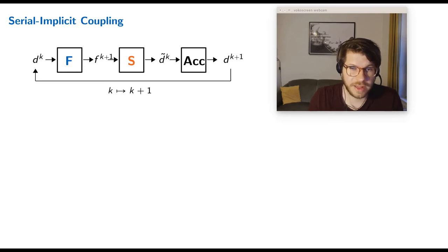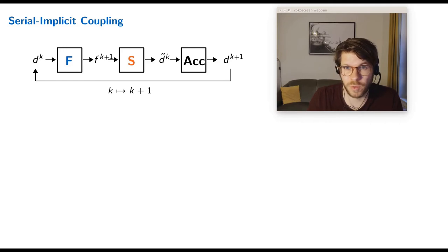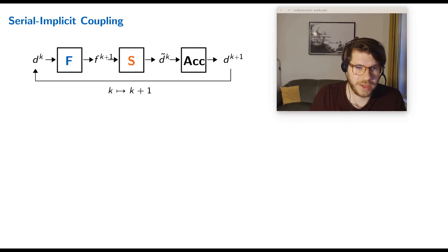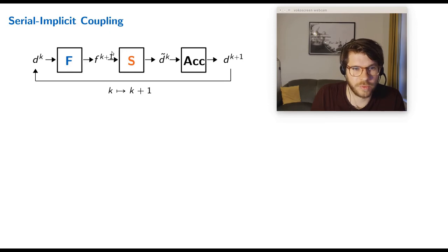As an example, let's look at serial implicit coupling. Serial coupling means both coupling partners are computed one after another, and implicit means we compute them many times within one time step until convergence. We have displacement values in the k-th iteration; with those we go into the fluid solver, compute one time step, get forces, go into the solid solver, and get displacements back.